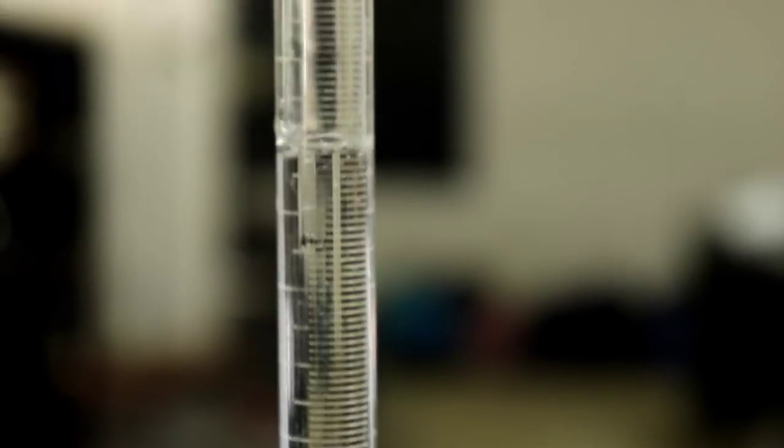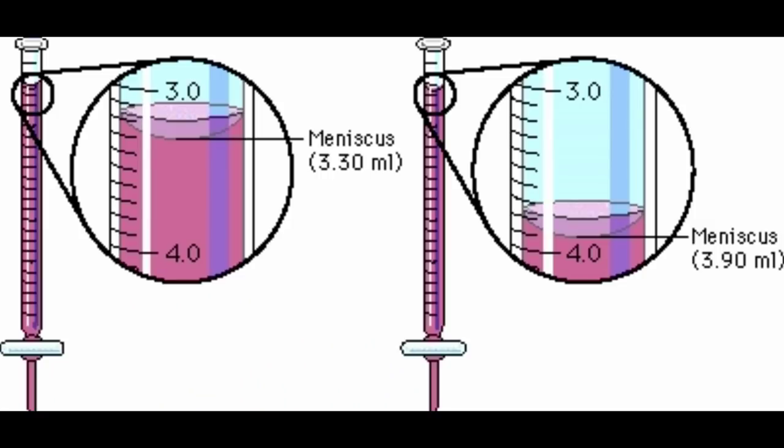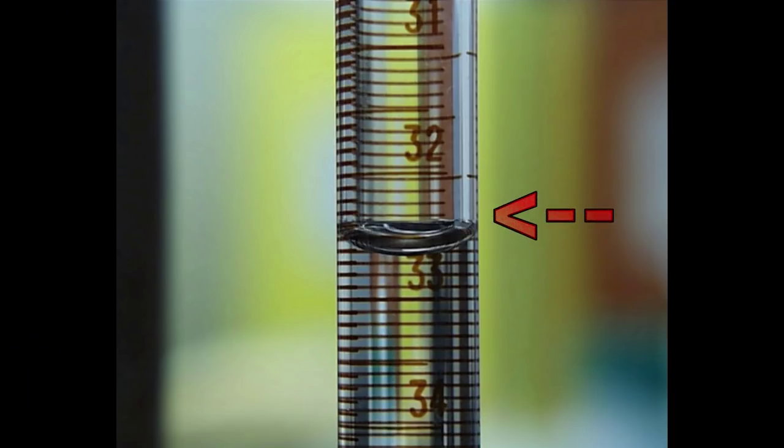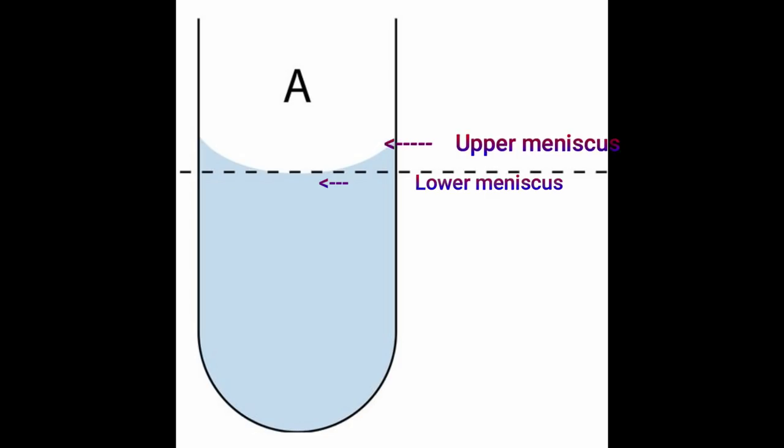Once the air gap is removed, fill the solution in the burette above the zero mark. For colorless solution we need to see the lower meniscus and for colored solution we need to see the upper meniscus.